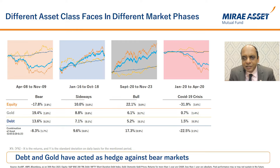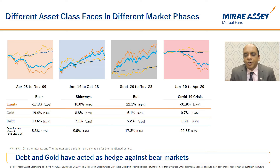We also studied the performance of three asset classes in different market phases. During the bear phase, equity corrected by 17.8% whereas gold and debt gained by 19.4% and 13.6% respectively — essentially acting as a hedge. In sideways markets, equity, debt, and gold returns were in a narrow range. During the bull phase, equity generated 22% returns while gold and debt gave low single-digit returns. The combination has generated less volatile returns throughout.